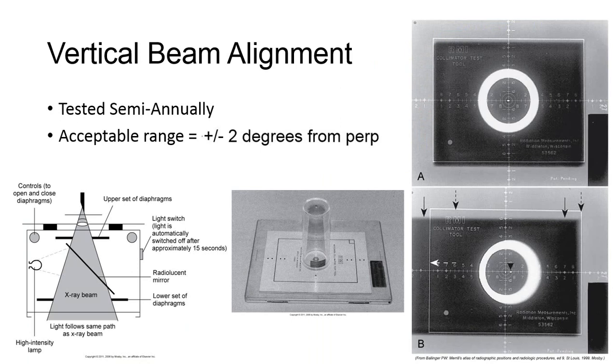As previously mentioned, this tool can be used for additional tests, like vertical beam alignment. When you set your x-ray tube to 0 degrees angulation, pointing straight down at the x-ray table, it should be perfectly perpendicular. This test, which is sometimes called beam perpendicularity test in some textbooks, determines if 0 degrees at the tube controls truly represents a beam with no angulation at the central ray.